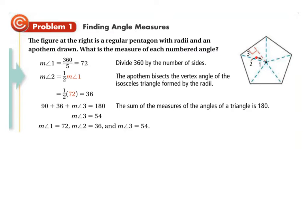Angle two is going to be half of what you get for the center angle. And because you're forming a 90 degree angle with the apothem, angle two and angle three together will form 90 degrees. So once you find angle two, you can subtract that from 90 to find angle three. The measure of angle one is 360 divided by the number of sides. The measure of angle two is one half of angle one because the apothem bisects that vertex angle — because it's an isosceles triangle.